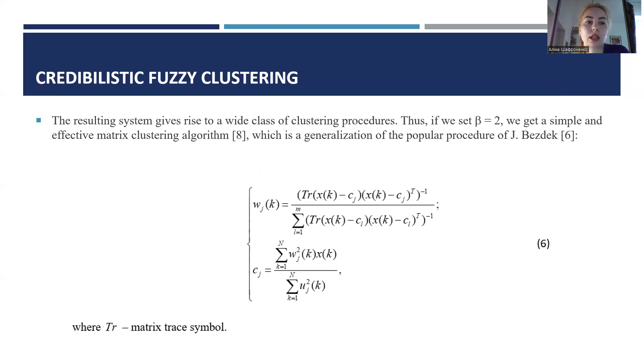The resulting system gives rise to a wide class of clustering procedures. Thus, if the set beta equals 2, we get a simple and effective matrix clustering algorithm, which is a generalization of the popular procedure of Bezdek, formula 6.